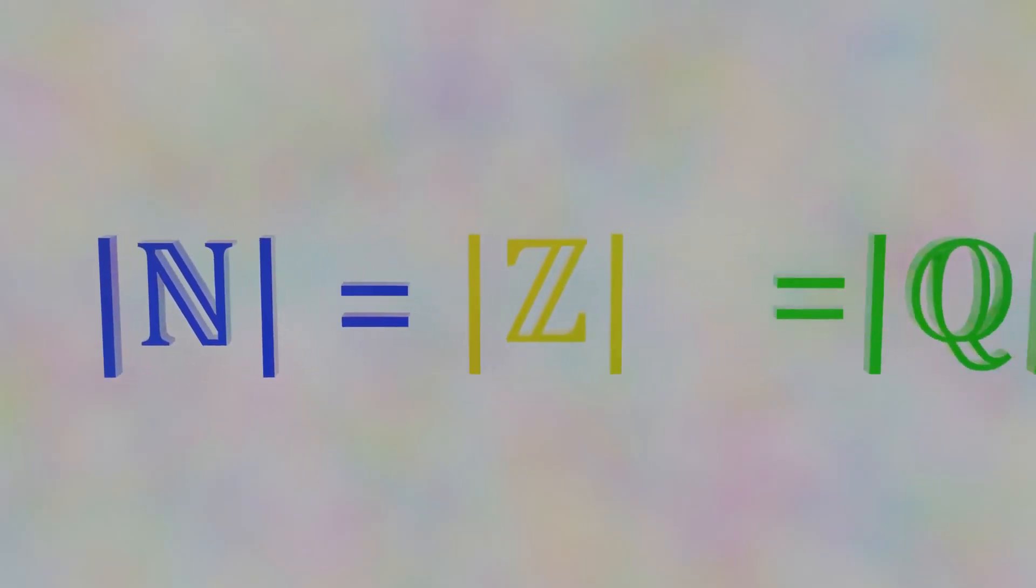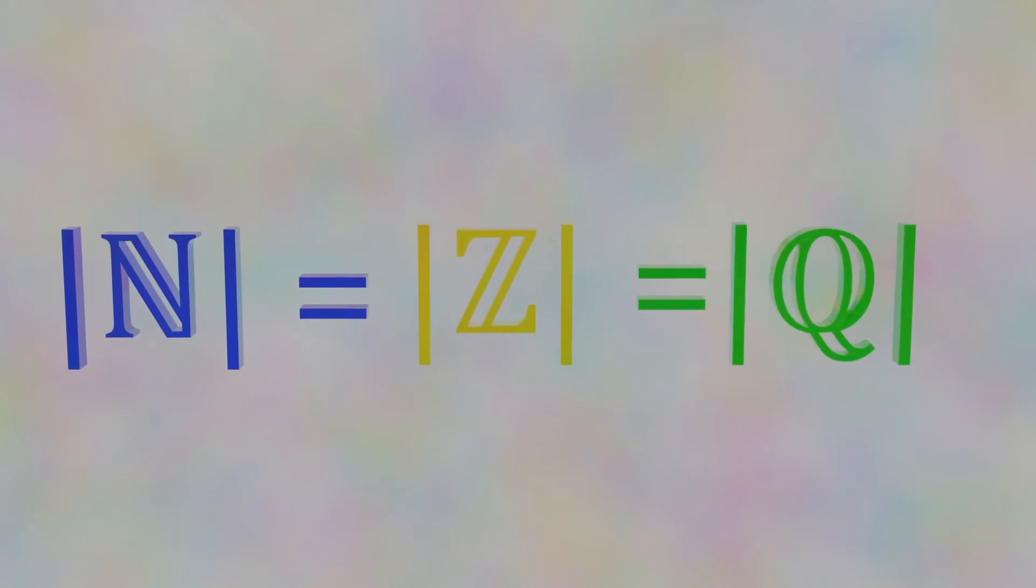The rational and natural numbers have the same size, and the cardinality is aleph null, the smallest of the infinite sets.